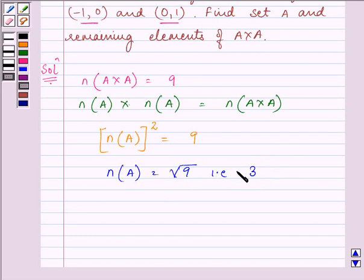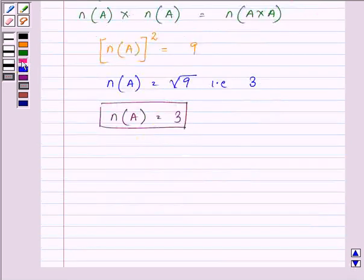So we found that the number of elements in A is equal to 3, which completes one part of our question. Now, we need to find the remaining elements of A×A. First of all, let us find A×A.